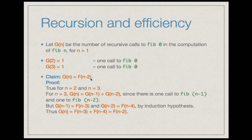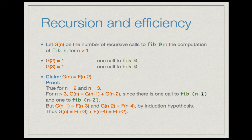We claim that g(n) = f(n-2). For a proof, we see that the statement is true for n=2 and n=3. For n > 3, g(n) = g(n-1) + g(n-2) because there is one call to fib(n-1) and one call to fib(n-2) in fib(n). By induction hypothesis, g(n-1) = f(n-3) and g(n-2) = f(n-4). Therefore g(n) = f(n-3) + f(n-4) = f(n-2), which is a large number growing exponentially in the size of n. Thus there are exponentially many calls to fib(0) in a computation of fib(n).